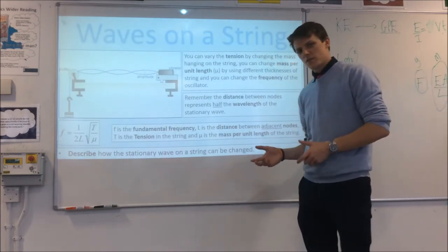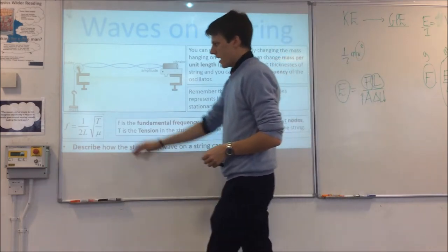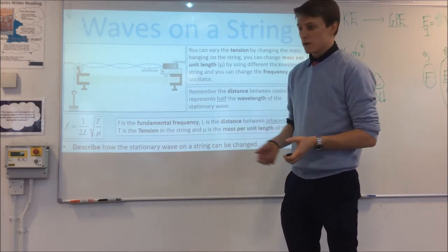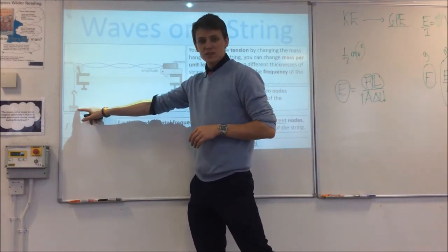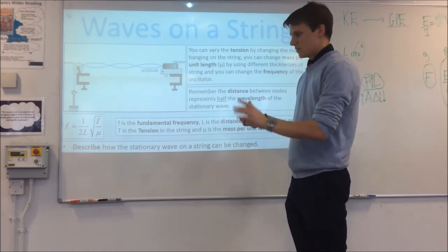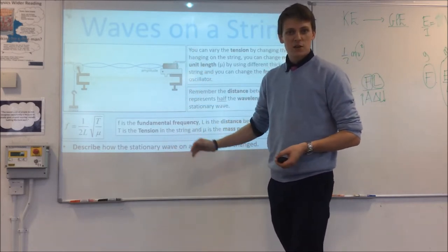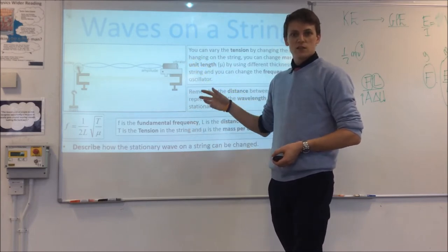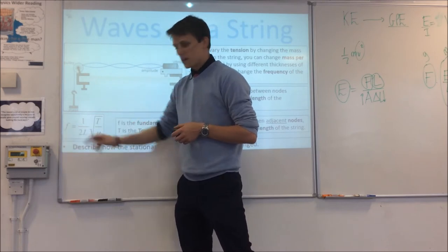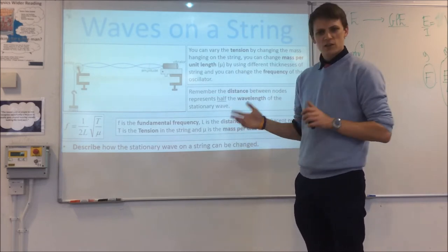Let's look at how we can investigate stationary waves and things that change their properties. In this practical, the easiest thing to investigate is how the tension in your string affects the frequency you need to use to produce a standing wave. You use fixed masses hung on the end as a way of changing the tension, then adjust the frequency of your vibration generator until you produce a second or third harmonic — getting the fundamental is quite tricky. For each mass you hang on, you adjust until you find the frequency to make your second or third harmonic.